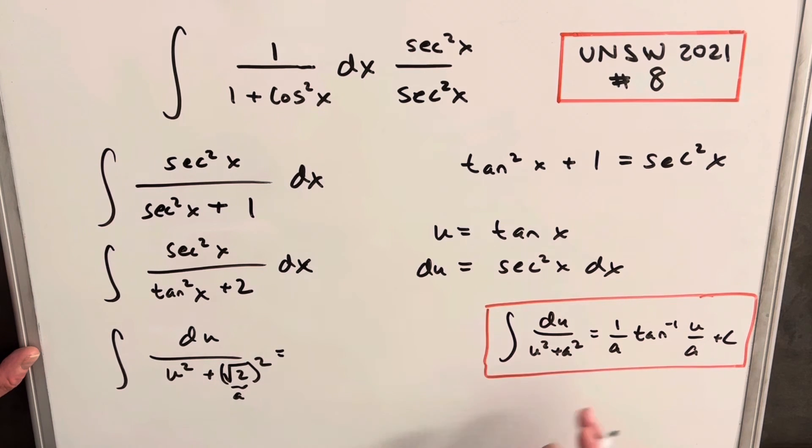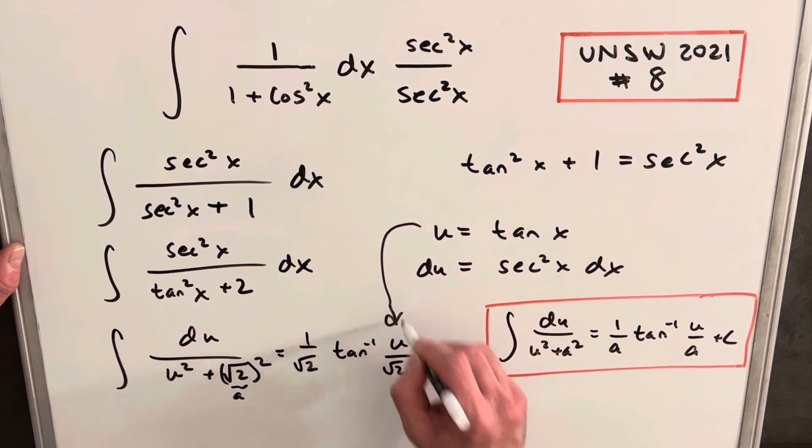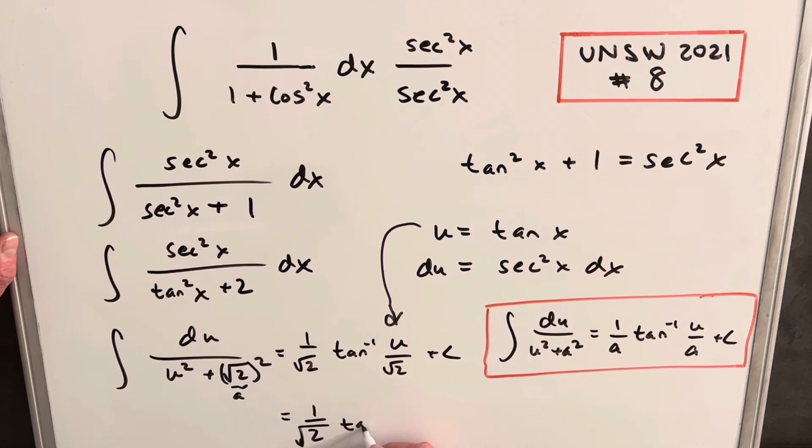And so then let's integrate this using our formula. So we're going to have one over square root of two arc tan u over square root of two. Then all we need to do is just back substitute here. And we're left with our final answer, which is going to be one over square root of two tan inverse tan x over square root of two plus c.